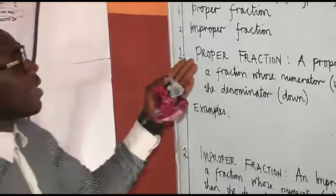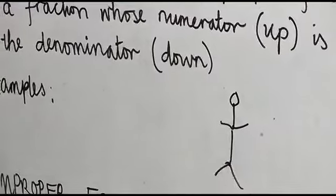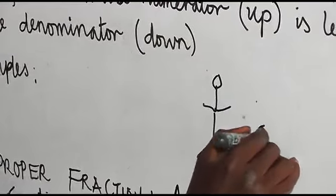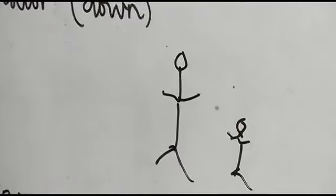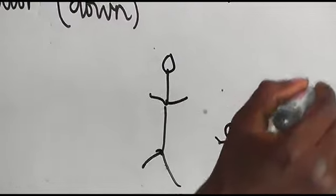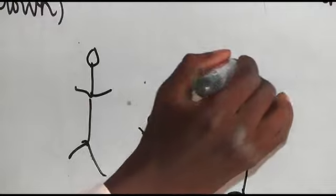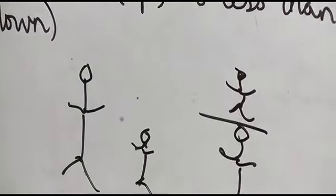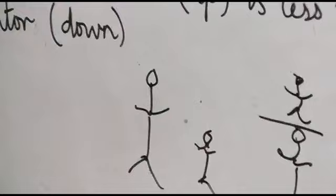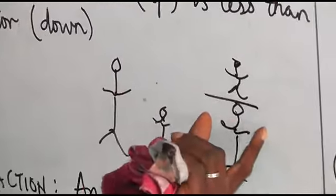In a real-time example, we can liken proper fraction to a mother and a child. This is the mother and this is the child. We can liken it to a mother carrying a child — the child, which is the smallest, is on top of its mother.